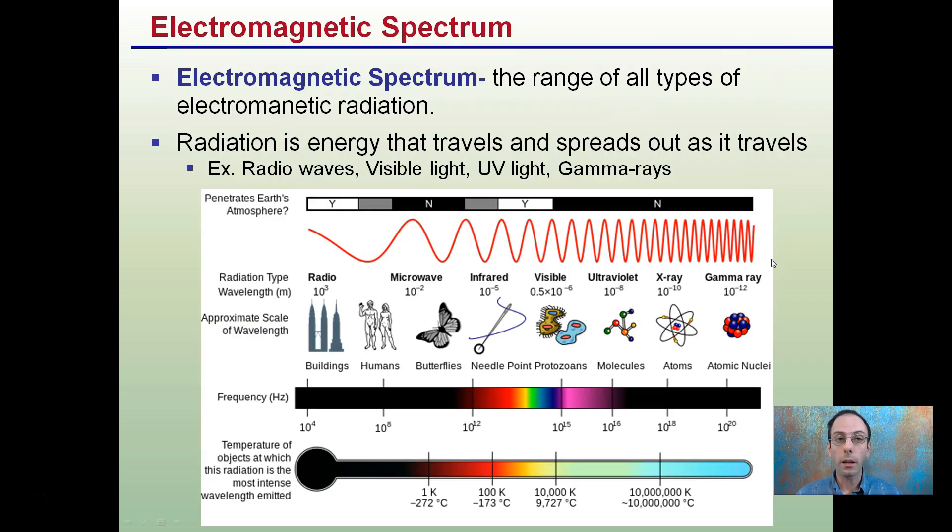So first off, we're looking at the electromagnetic spectrum, which is the range of all types of electromagnetic radiation. The radiation is energy that travels and spreads out as it travels. Examples of those are radio waves, visible light, which is only a small portion of the full electromagnetic spectrum, UV light, and x-rays and gamma rays also.